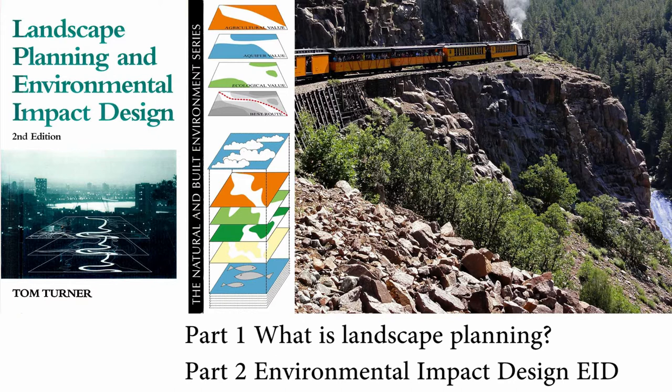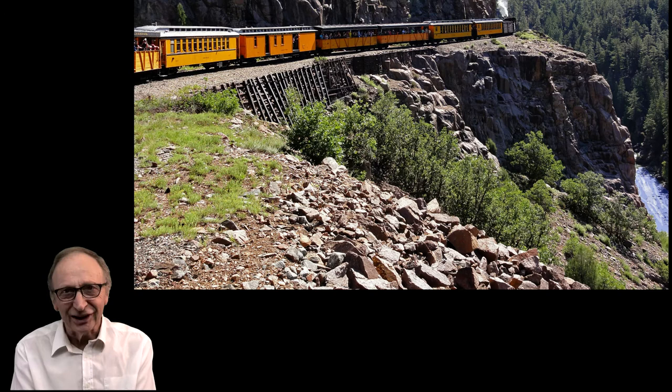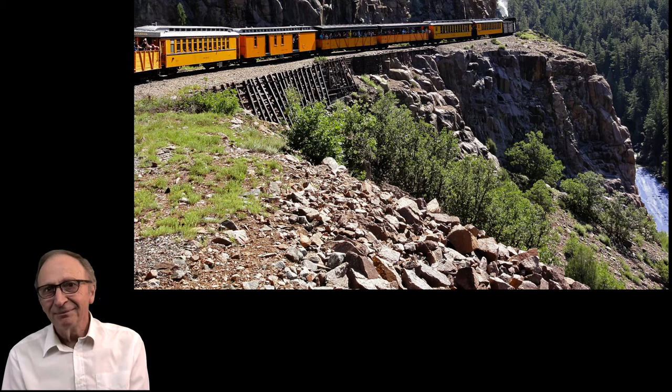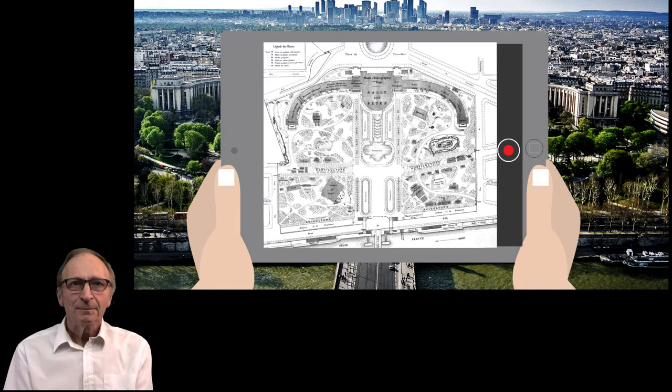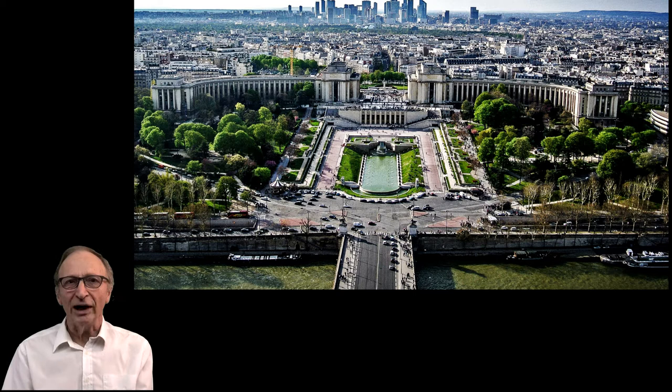The difference between landscape planning and design can be explained with a simple analogy. Think about going on holiday: you do the planning first, then you do the design, then you buy some tickets and set off. Likewise, for a landscape architecture project, you do the planning first, then you do the design, then you specify the construction and start work.